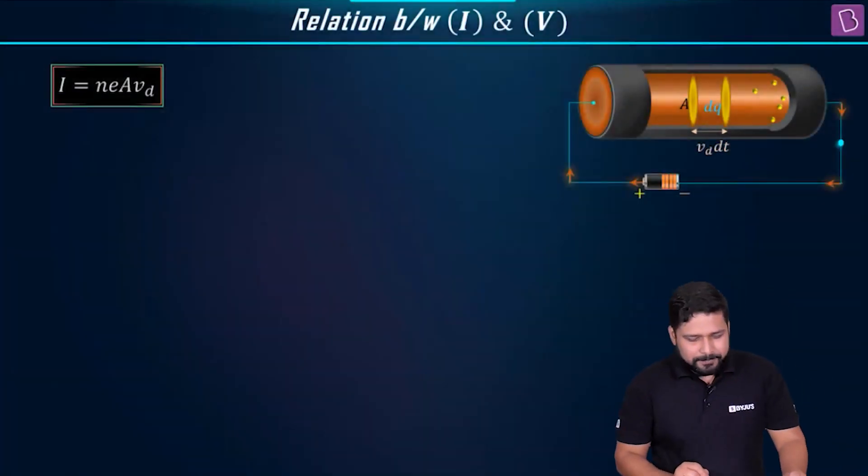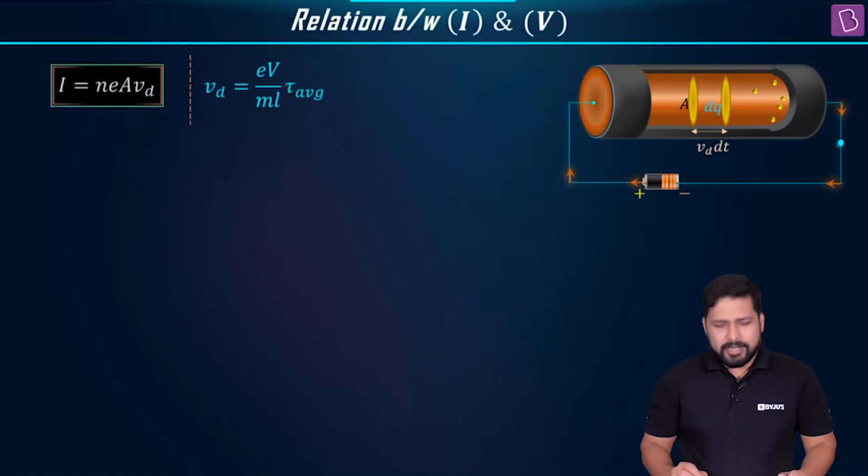Let's derive a relation between the current and the potential. We know that the current is dependent on the drift velocity and drift velocity is dependent on potential. Of course, we have expressed it also.